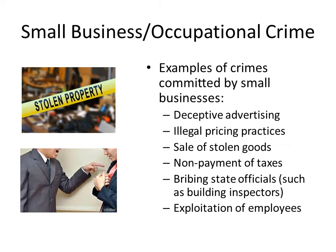We're going to start off talking about small businesses with occupational crime. Examples of crimes committed by small businesses include deceptive advertising, illegal pricing practices, and sale of stolen goods — and this happens all the time. Guys who hijack trucks show up at the back doors of little businesses because those businesses don't track their inventory the same way Target or Walmart does.